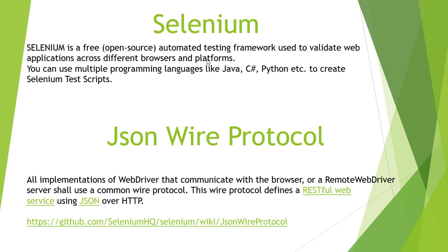What Selenium does is it provides an automated way by which we can communicate with the browser. Whenever we want to perform some action — like click a button or find some element — we can write a script for it. It supports multiple languages, so we can write test scripts and on the basis of commands it performs actions on the browser. You can use multiple programming languages like Java, C#, Python, etc.